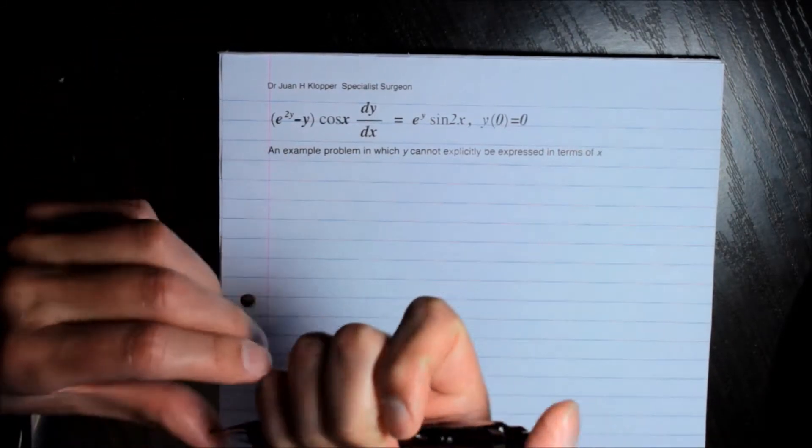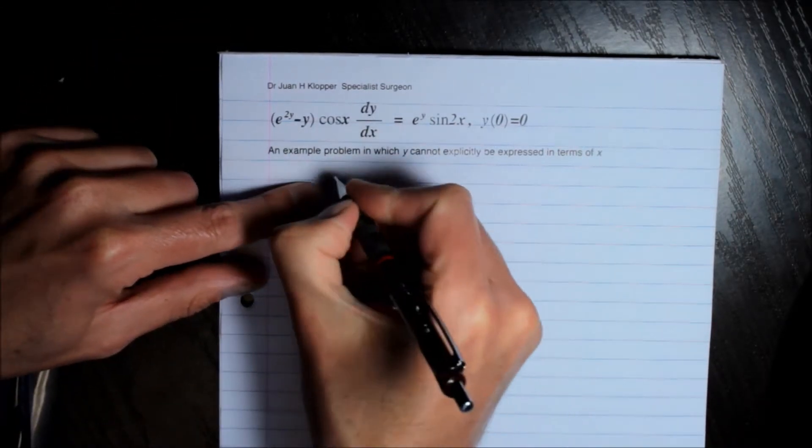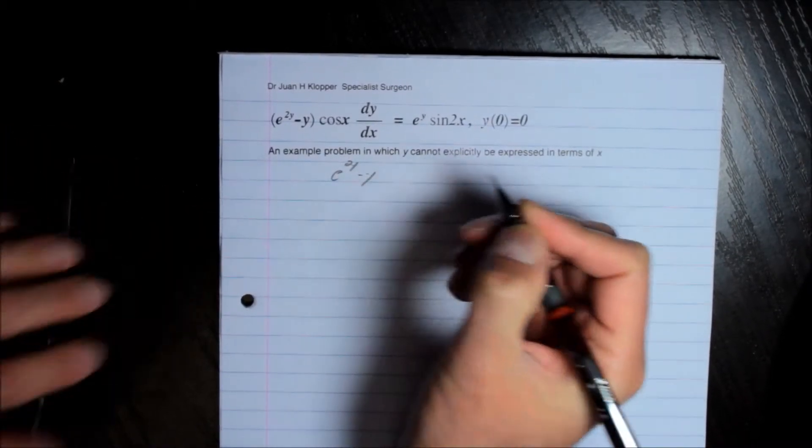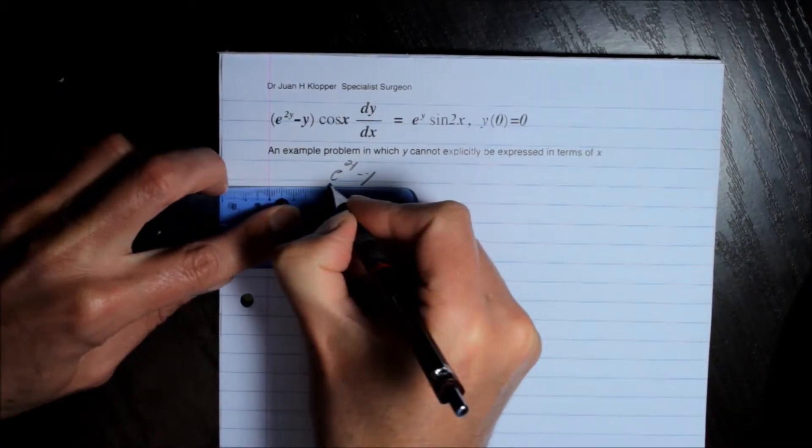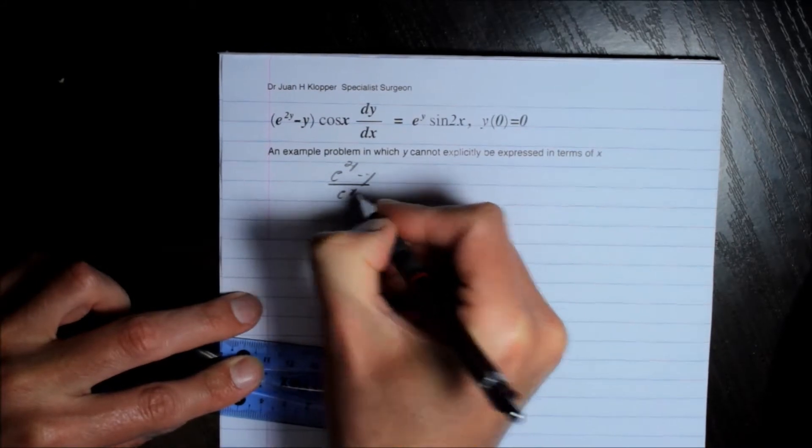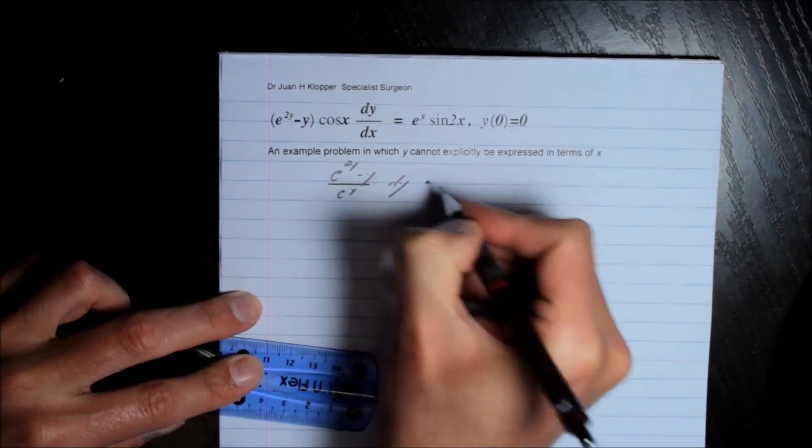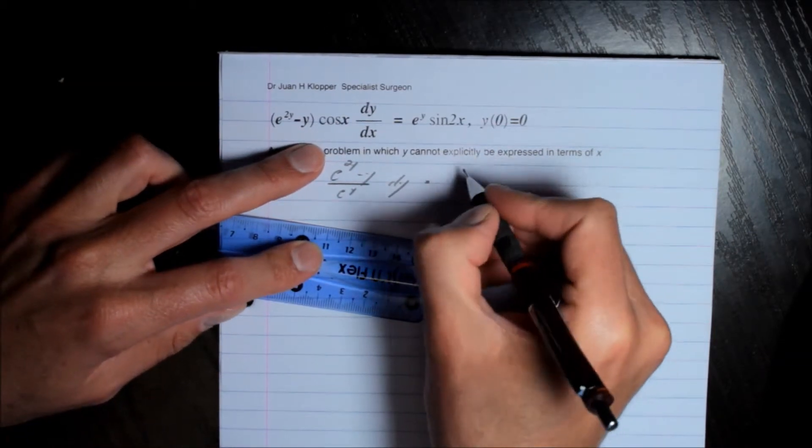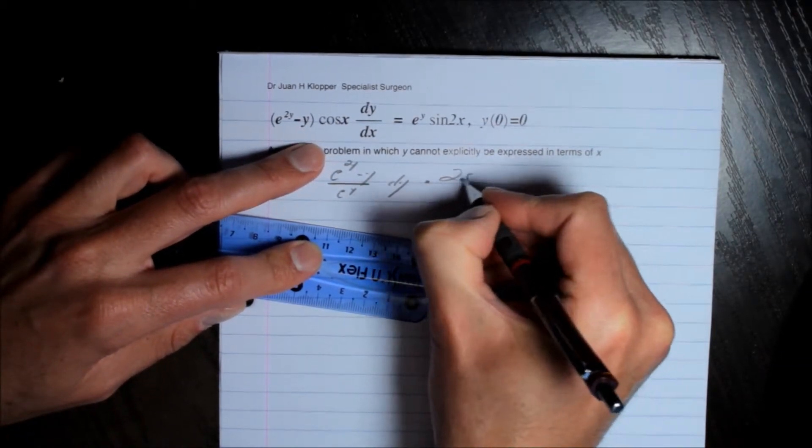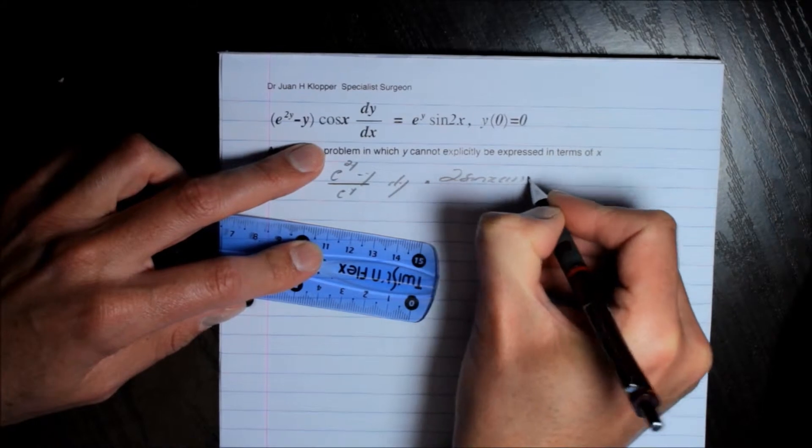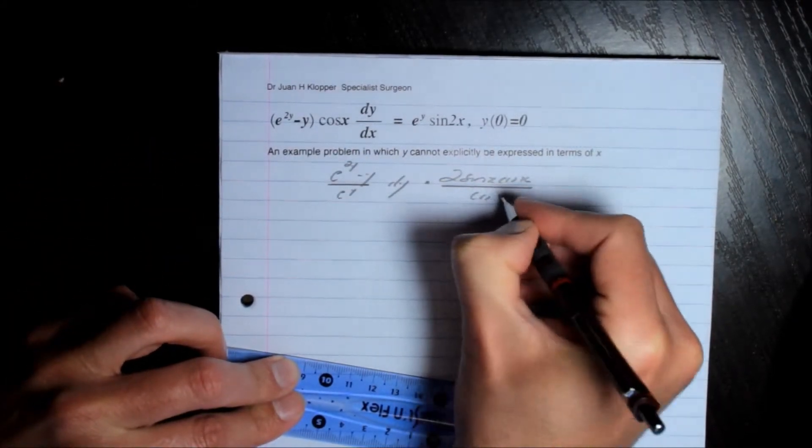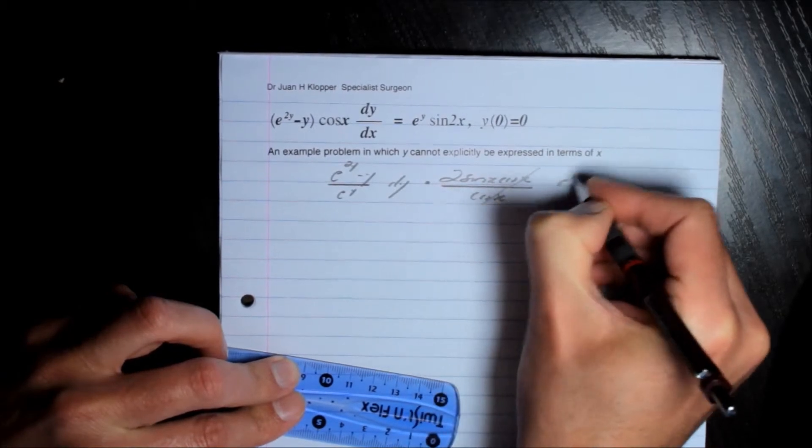We can keep e^(2y) minus y on this side divided by e^y with respect to y. And that is going to equal the sine of 2x, which by trigonometric identity is 2 times sine x cosine x divided by cosine x on this side. So certainly those would cancel dx.